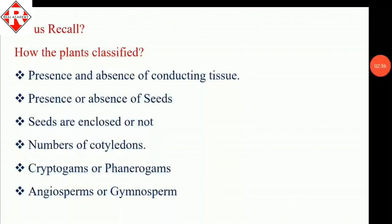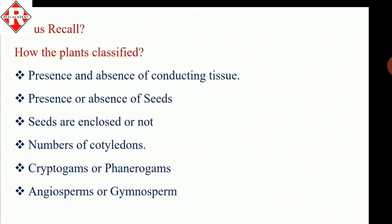Let's recall how plants are classified, which we studied in standard 9. Based on the presence or absence of conducting tissue — xylem and phloem — we can classify plants. On the basis of presence or absence of seed, plants are classified into cryptogams and phanerogams. Whether the seed is enclosed inside a fruit or naked gives us angiosperms or gymnosperms. Further, if there is one cotyledon the seed is monocotyledon, and if two cotyledons, it is dicotyledon.